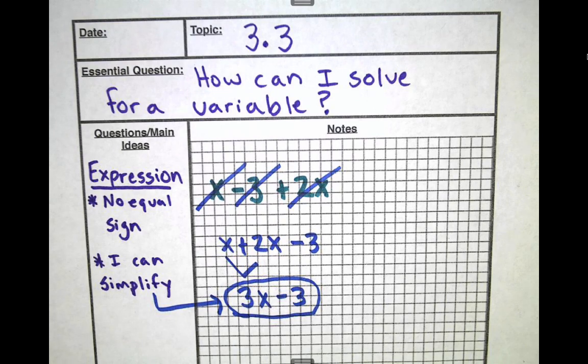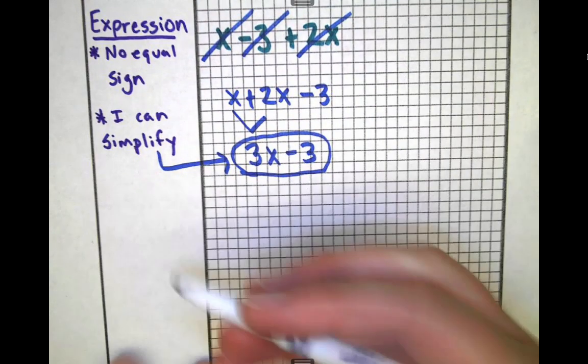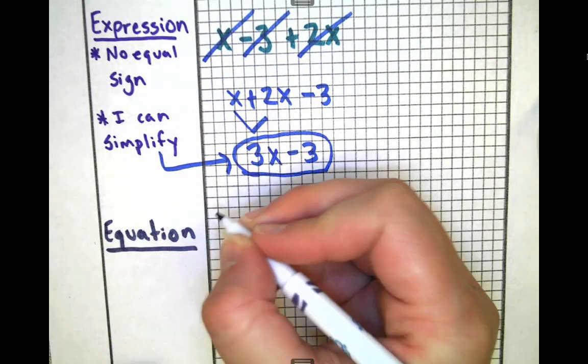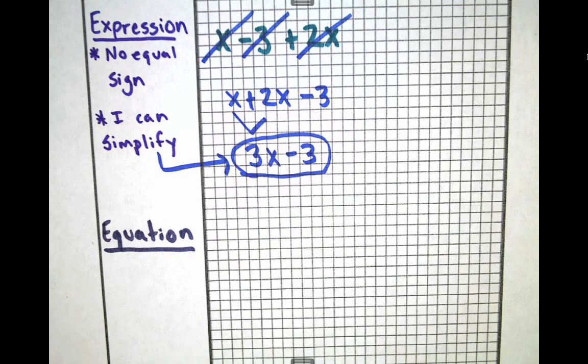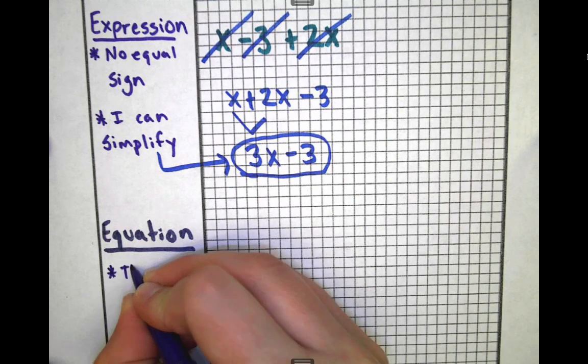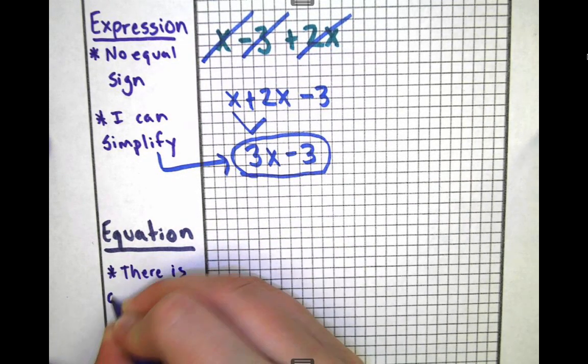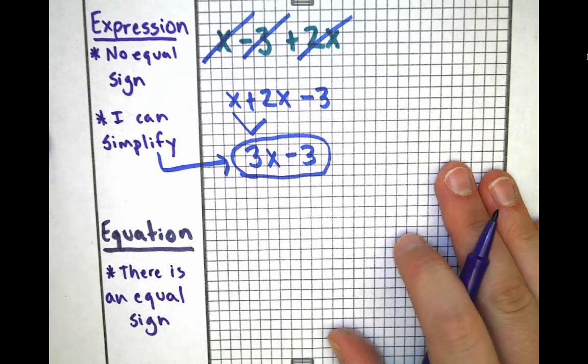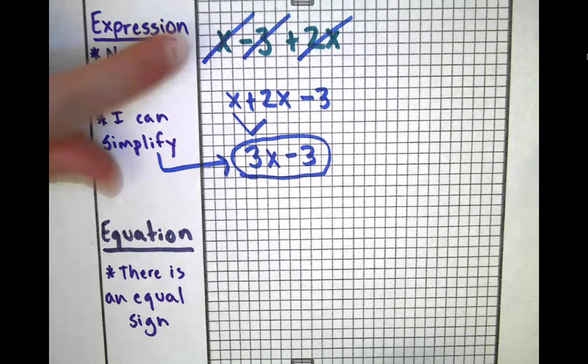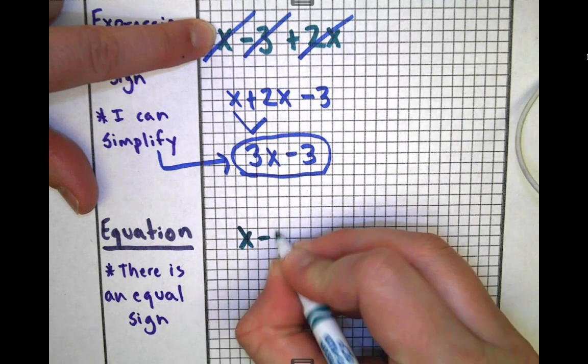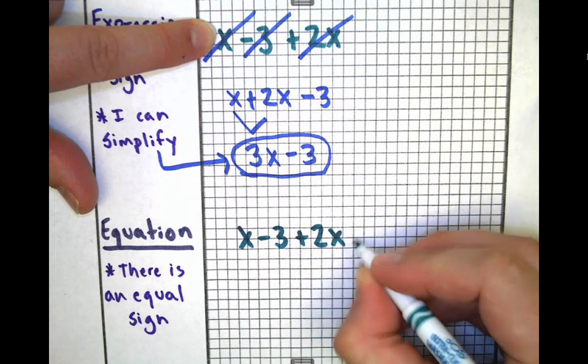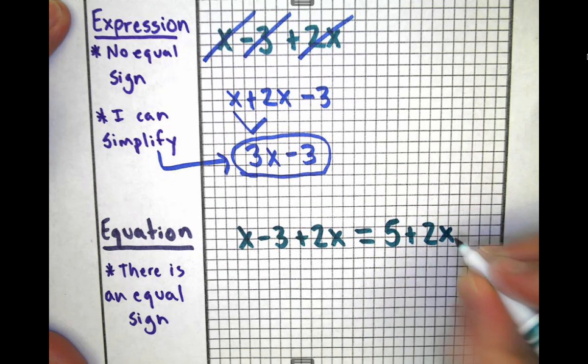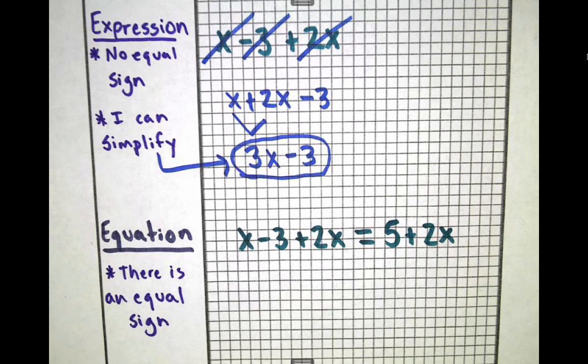Let's talk about what an equation is. An expression and an equation are different things. Equations do have equal signs. That's a huge clue. So what I'm going to do for my equation is take the same thing from above: x - 3 + 2x, but now I'm going to say equals 5 + 2x. Now we've got an equal sign, and now we've got what we call an equation.